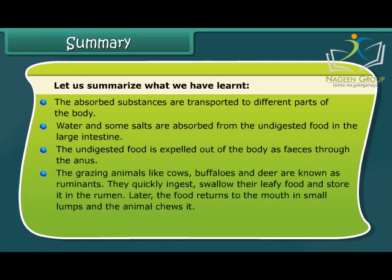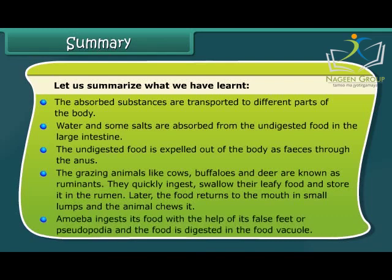Grazing animals like cows, buffalos, and deer are known as ruminants. They quickly ingest and swallow their leafy food and store it in the rumen. Later, the food returns to the mouth in small lumps and the animal chews it. Amoeba ingests its food with the help of its false feet or pseudopodia, and the food is digested in the food vacuole.